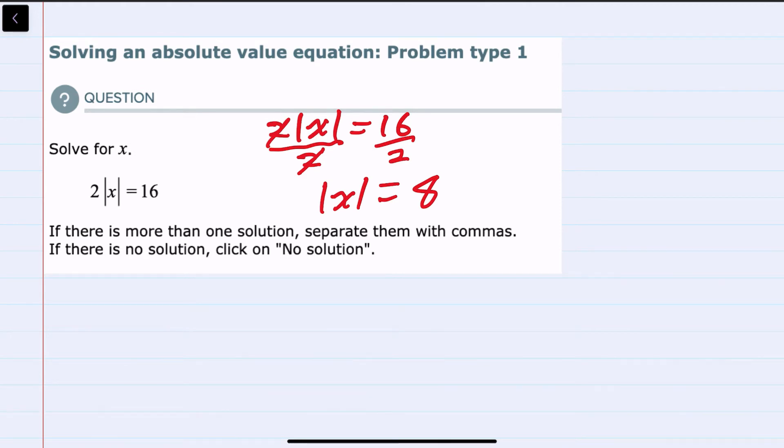we can move ahead by dropping the absolute value so that we just have the x. And on the other side of the equation, we would have both a positive and a negative 8.